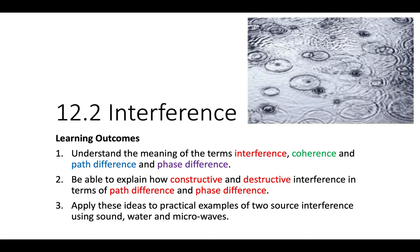This lesson is about interference and follows chapter 12.2 in the textbook, leading on from chapter 12.1 which was about superposition of waves. The learning outcomes are shown on screen — there is knowledge to recall and understand, which you'll need to explain certain situations, and practical examples to apply. We're going to be explaining those terms which are shown in color text.